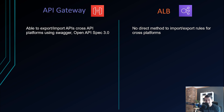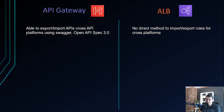For ALB, routing rules are typically defined using CloudFormation. If you want to move to another load balancer from another cloud or vendor, you would have to recode those rules — there's no easy import/export mechanism.